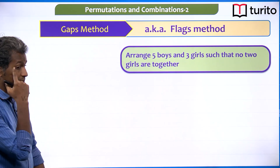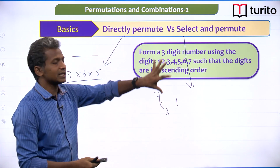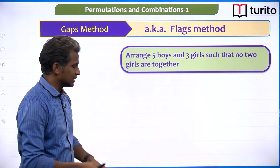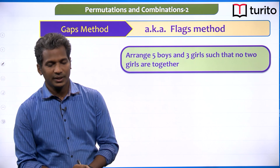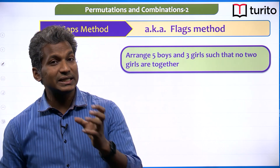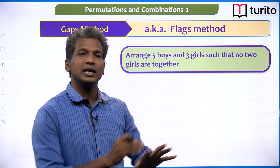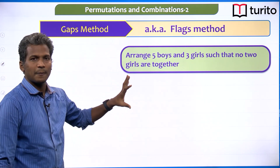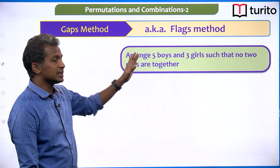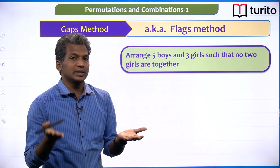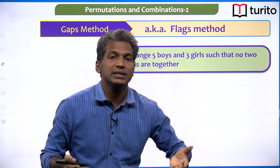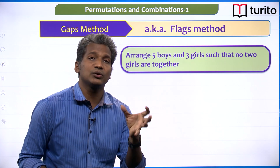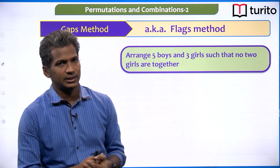Now let us look at another technique called the gaps method or flags method — also called sticks method or walls-and-sticks method in some books. This is a type of select-and-permute and can also be called a micro method because it deals with all specific cases.